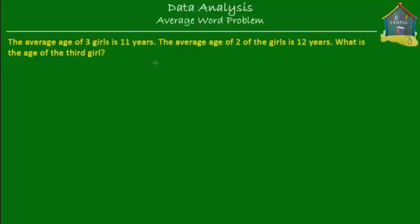Welcome to homecampus.com.sg. Let's solve this word problem on average. It says that the average age of three girls is 11 years. The average age of two of the girls is 12 years. What is the age of the third girl?